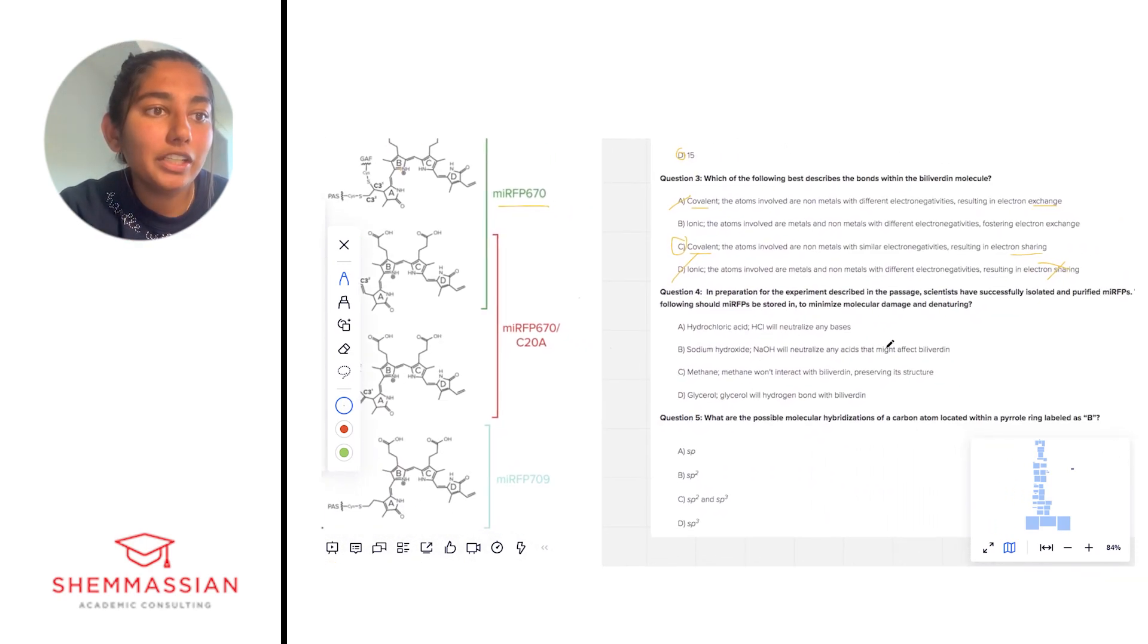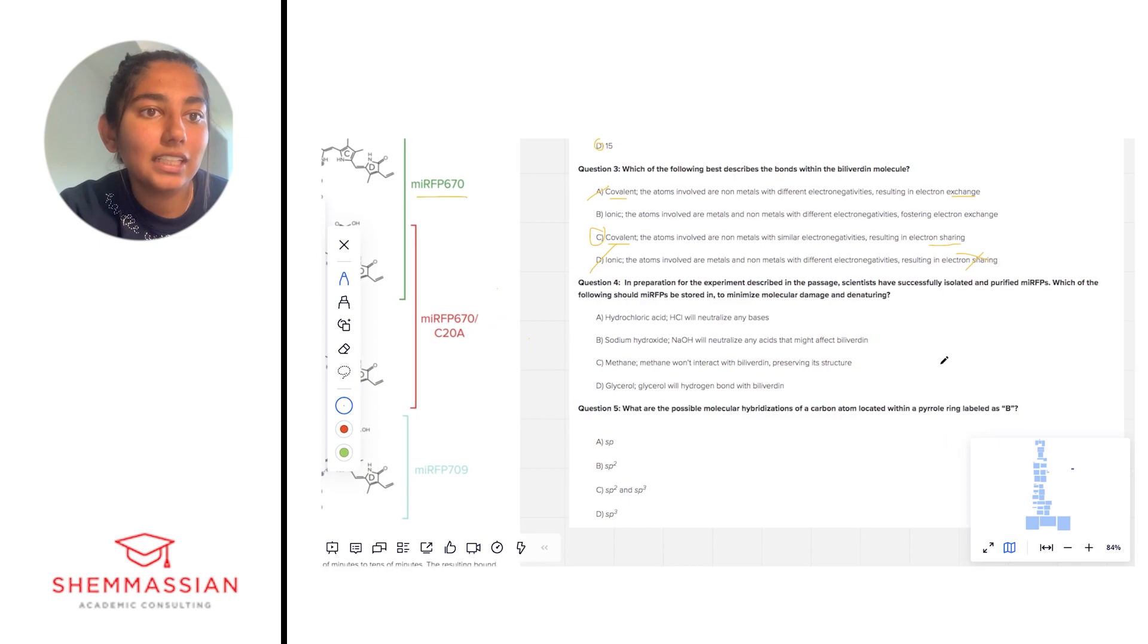Number 4: In preparation for the experiment, scientists have successfully isolated and purified MIRFPs. Which of the following should MIRFPs be stored in to minimize damage and denaturing? Basically, the key to storing something and having it not get too messed up is you want to store it in something that is similar to it. If you store it in something that is way too charged, it will end up denaturing the molecule.